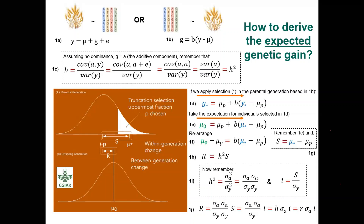Let's go step by step. In equation 1A, you can express the phenotype Y as a linear function of a mean or intercept called mu, a genotype effect G, and an error E. In 1B, you can rearrange the same equation to be seen in terms of the genotype instead of the phenotype — where the genotype is a function of the actual phenotype minus the mean of the population, multiplied by a slope that accounts for the error. The slope of a regression is calculated as the covariance of two variables over the variance of the response variable. The covariance between the additive genotype effect A and the phenotype equals the variance of the genotype divided by the variance of the phenotype — which is the heritability. So this slope is the heritability.